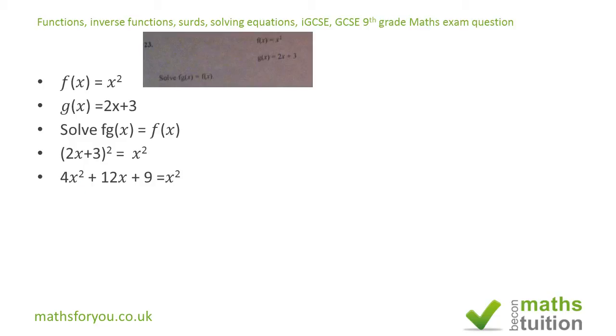We end up with 3x² + 12x + 9 = 0. Now I can see that 3 is common to every term, so if I take 3 outside the bracket I have 3(x² + 4x + 3) = 0.